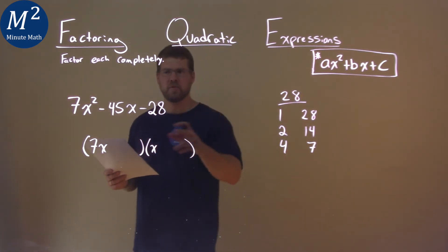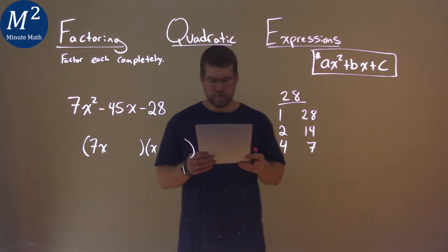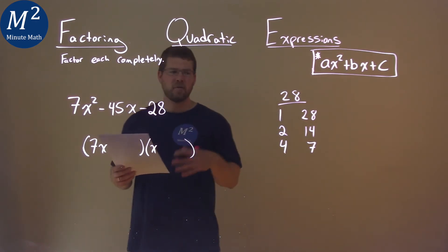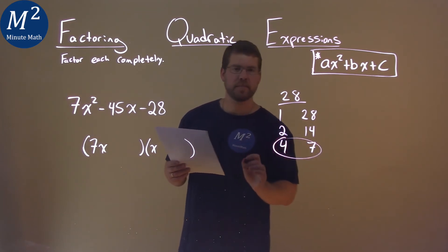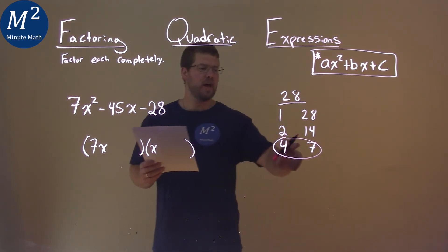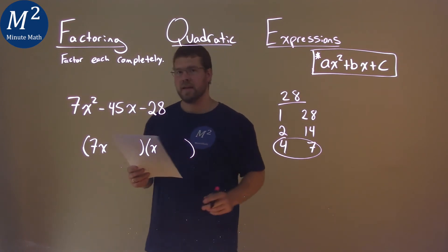And so my first gut reaction is dealing with this 4 and 7 here, because 7 times 7 is 49 which is close to that -45.